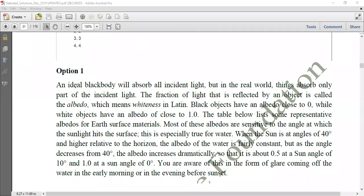As all of you know, an ideal black body will absorb all the incident light, but in the real world, things absorbs only part of the incident light. Every body is not a black body. The fraction of light that is reflected by the object is called as albedo. All of you know, that is also called as reflectance.